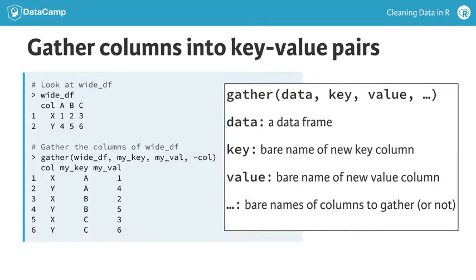In general, the gather function takes four arguments. Data is your data set, key is the name of the new column to contain the so-called keys, value is the name of the new column to contain the values, and the three dots represent either the names of the columns you wish to gather or the names of the columns to ignore, each prefaced with a minus sign. Note that none of these arguments require quotes around the variable names.